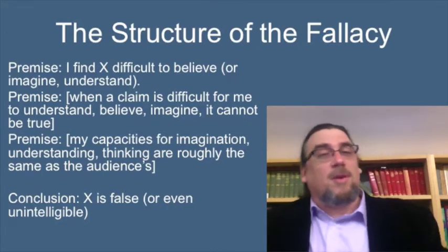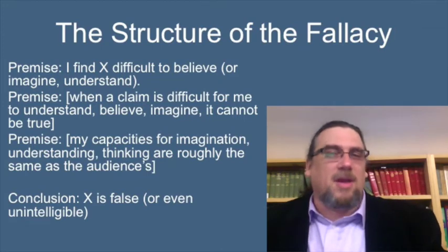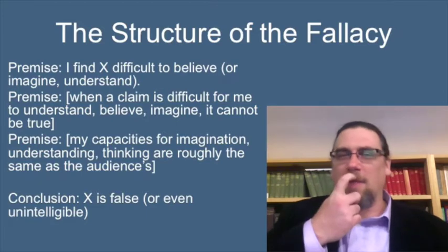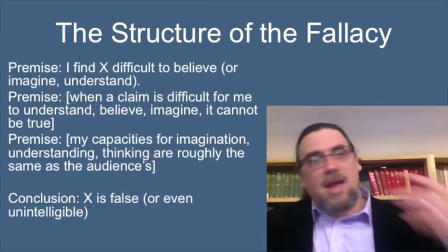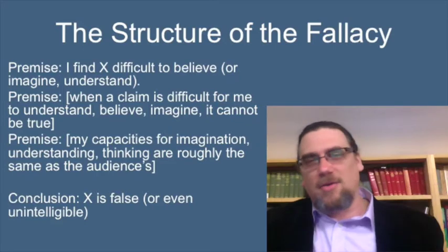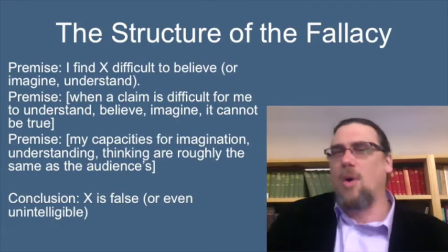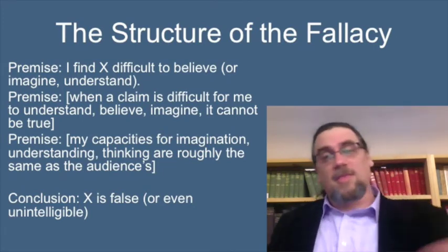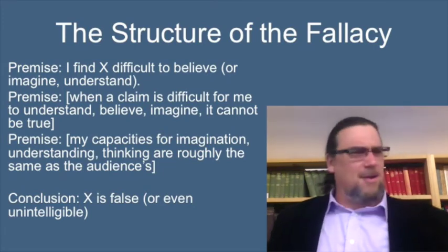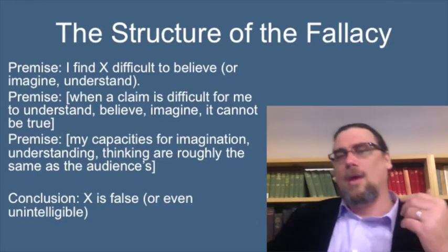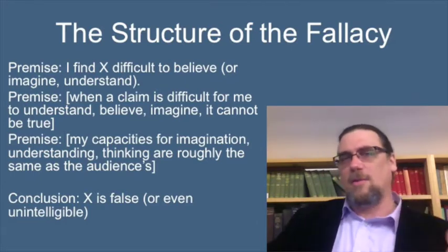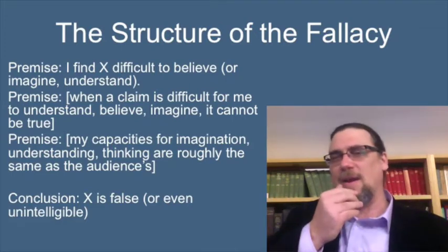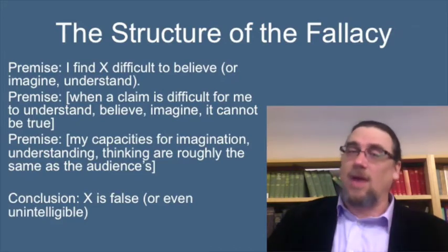If you made those implicit premises explicit, you would see very quickly that this is a bad argument. Here's one of the premises: when a claim is difficult for me to understand, believe, or imagine, it cannot be true or understandable. The other premise, very similar: my capacities for imagination, understanding, and thinking are roughly the same as the audience's. You say this to other people and you're like, "that can't possibly be the case," because you expect the audience is also going to say, "yeah, you're right, that doesn't make any sense." If you expose these implicit premises to the best disinfectant — which is sunlight — you see what's actually wrong here.